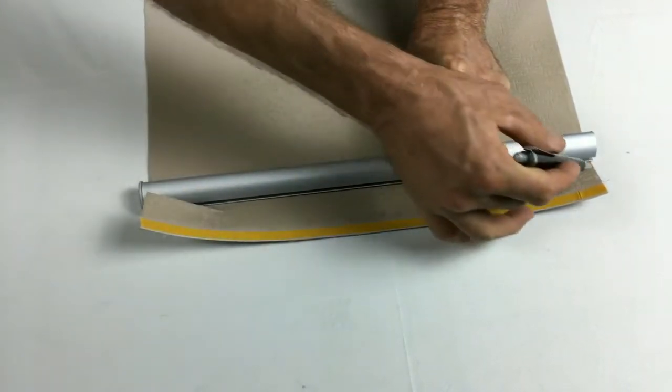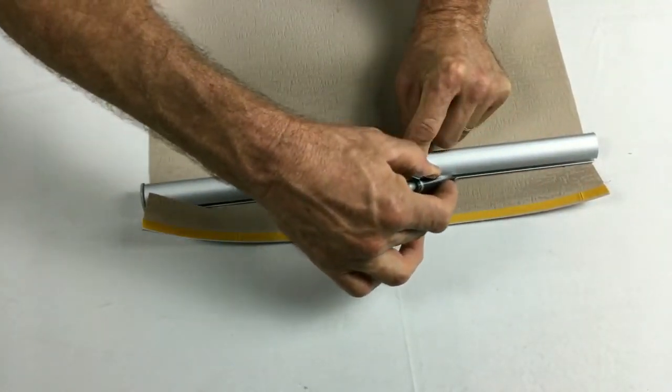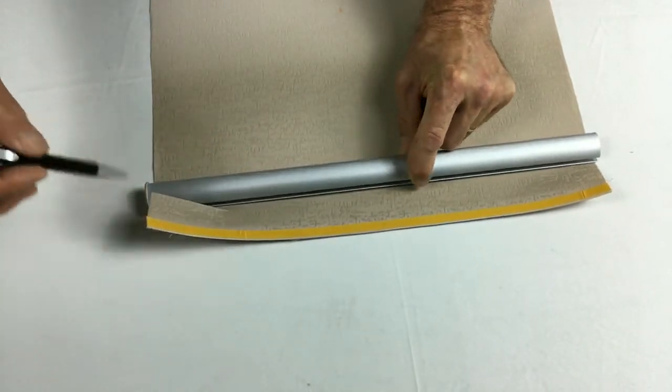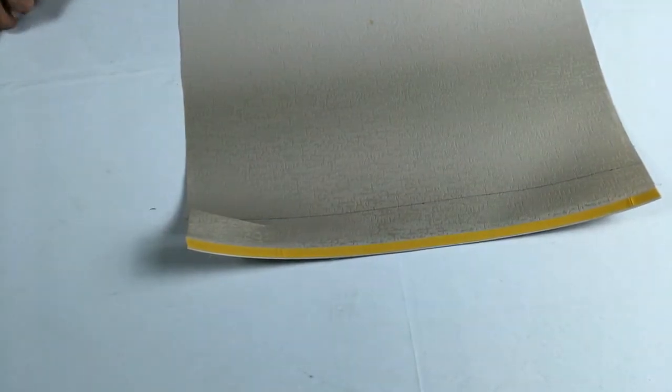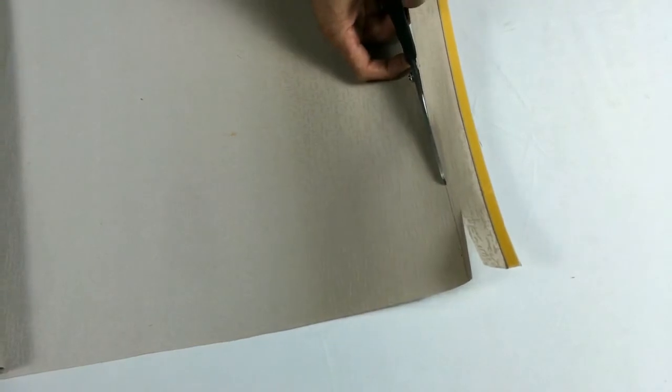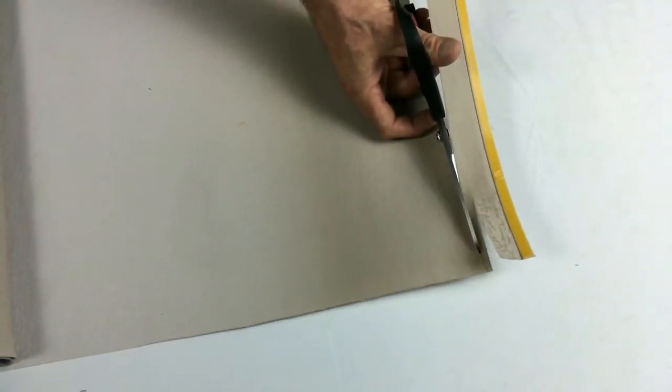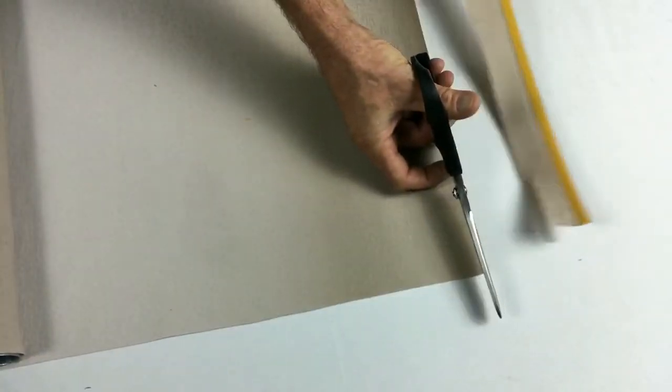From there, following the line, just cut carefully with a pair of scissors. Once you've got right to the other side, you can discard the other piece of fabric.